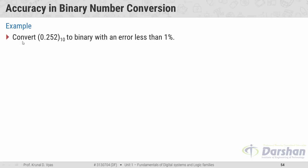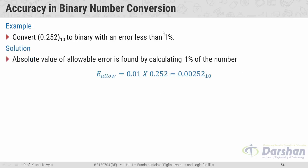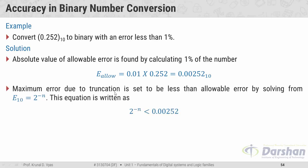In this example, we want to convert 0.252 from decimal to binary with an error less than 1%. The absolute value of allowable error is found by calculating 1% of the number: 0.01 × 0.252 = 0.00252 in decimal. So the absolute value of allowable error is 0.00252.